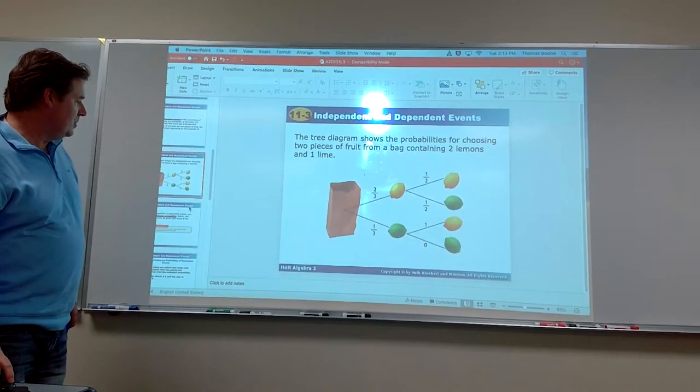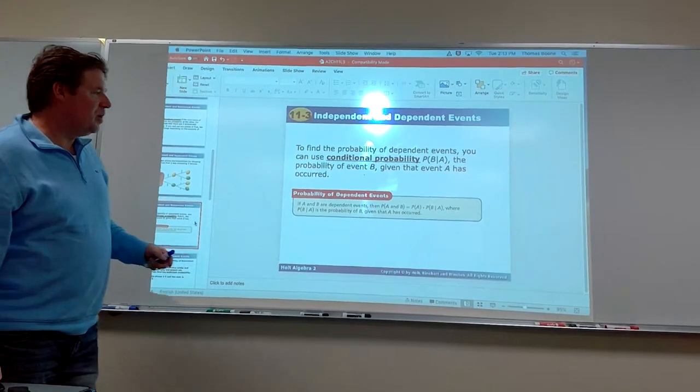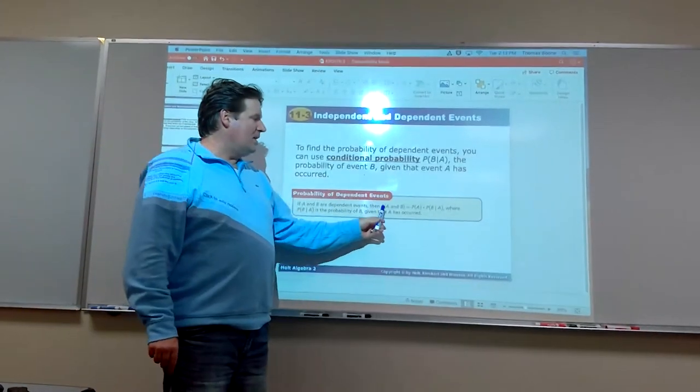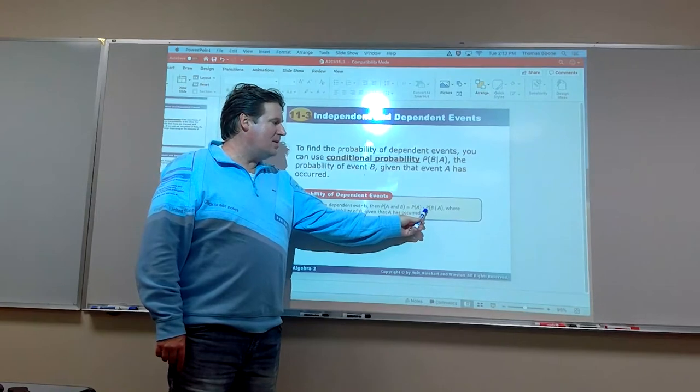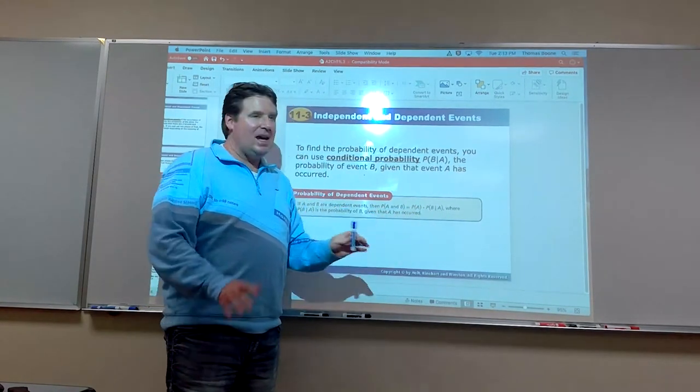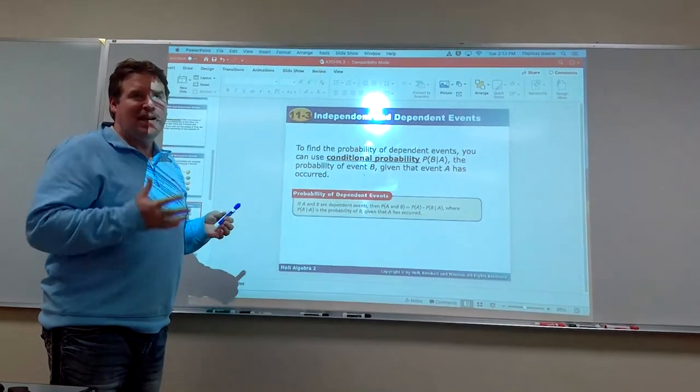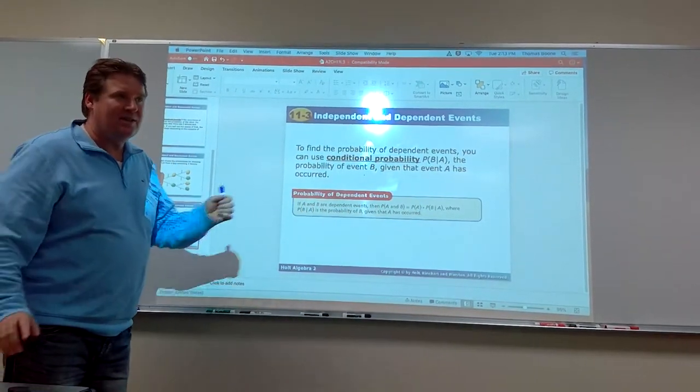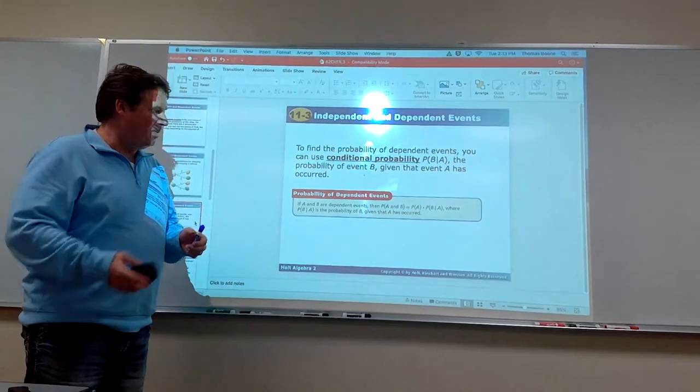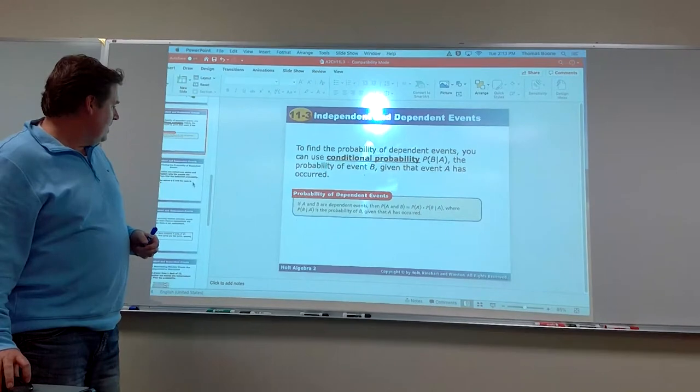So you might say, well how do you compute the probability of that happening? Well it's kind of similar to what we did. The probability of dependent events, it's the probability of A happening times the probability of B, given, that's what that line means, given that A has occurred. So again, you're still going to multiply the probabilities together when you do it. It's just that the probability of B is going to change a little bit, because you're not replacing in most cases.